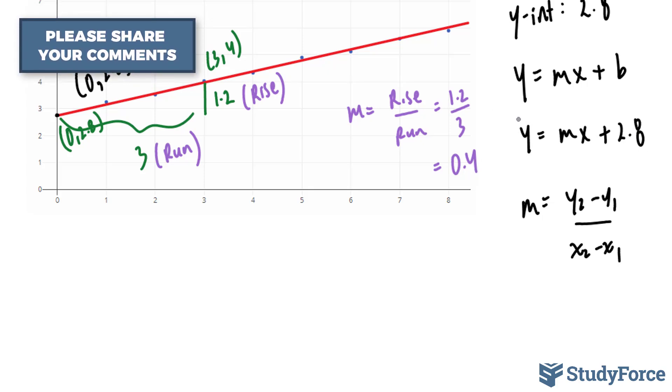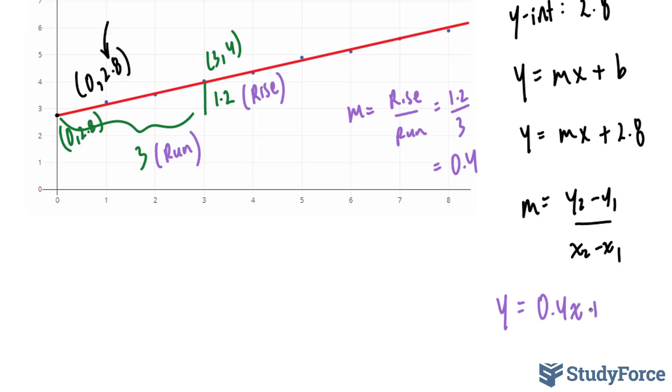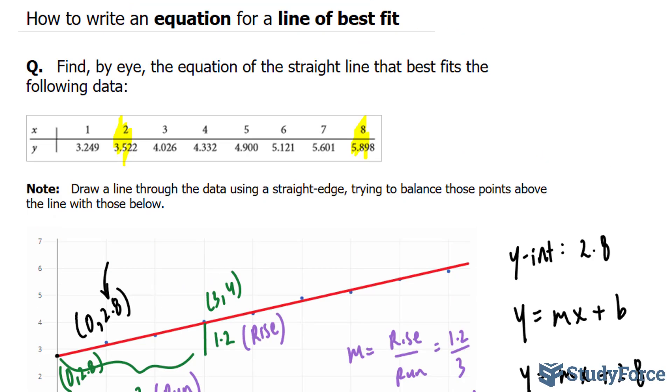Let's fill in our equation. y equals 0.4x plus 2.8 represents this line of best fit. And there you have it. That is how to write an equation for a line of best fit.